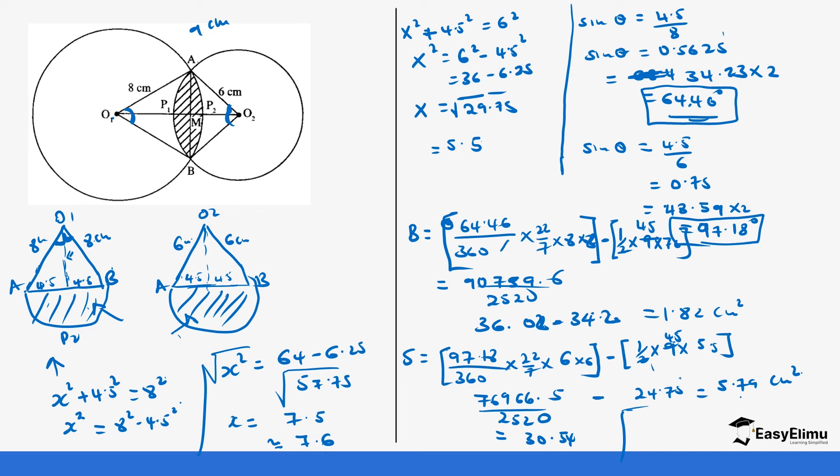30.54 minus 24.75 equals 5.79 centimeters squared. Now we've gotten the minor segment for the smaller circle. So we add these two together. That is 1.82 plus 5.79. 1.82 plus 5.79 gives us 7.61 centimeters squared, and this is our answer.